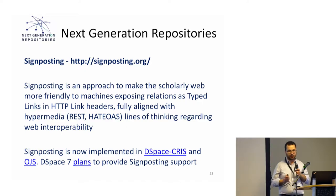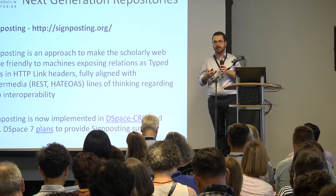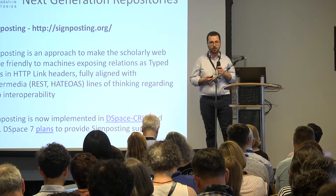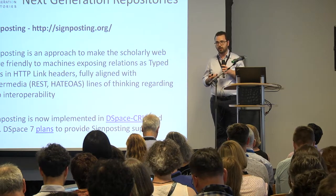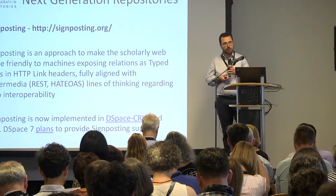Signposting is so easy to implement that we already have a lot of implementations around the world. The idea is to use the fundamentals of web technology to make any resource much more machine friendly. When a user goes on a web page, it is easy for a human to know what they need to do to download a PDF file. But it is much harder for a machine to find, on a journal article page, which is the PDF file and which are notices, advertising, or guidelines. The idea of signposting is to tag the precious information in the page in a way that is understandable by machines.